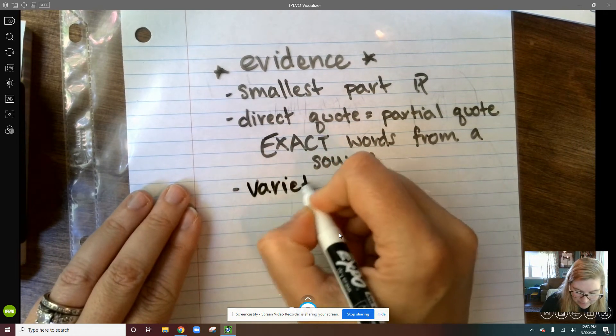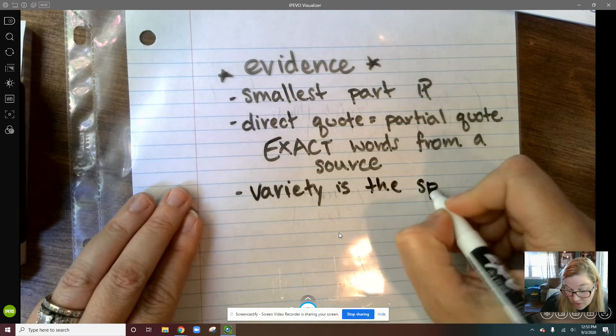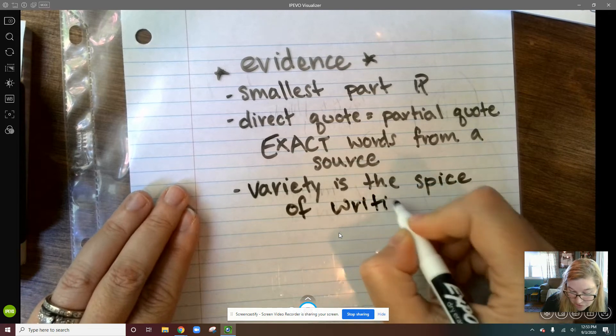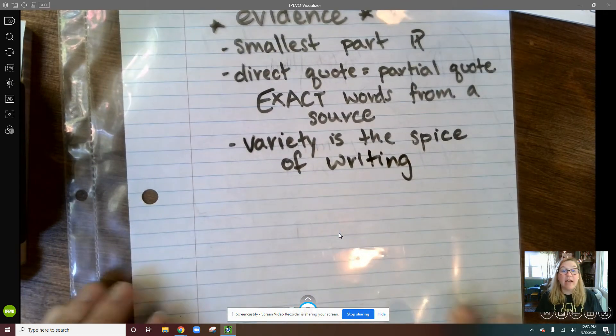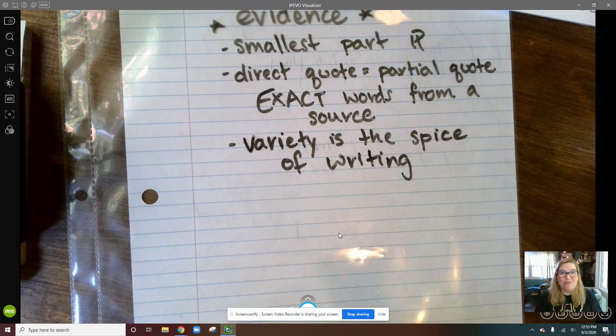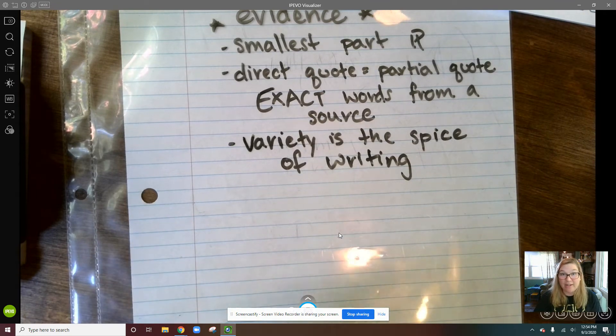So when we're talking about the types of evidence, that's where we get into that variety idea. So we're going to do another, just like we talked about P for paragraphs for body paragraphs, I'm going to give you another little acronym here, and that is CHATS.